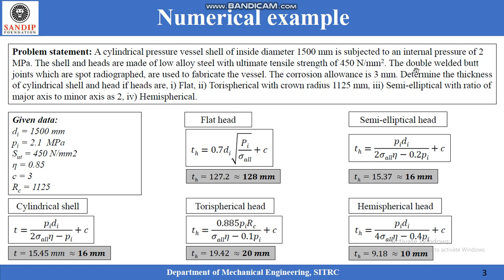The weld joint efficiency η is considered as 85%. Since the vessel is double welded butt joint and spot radiography is performed, we have to refer to the weld joint efficiency table we have seen in the last lecture. We can identify that the weld joint efficiency is 85% for this combination. First we have to design the cylindrical shell given by the formula, and the thickness comes out to be 15.45 mm.